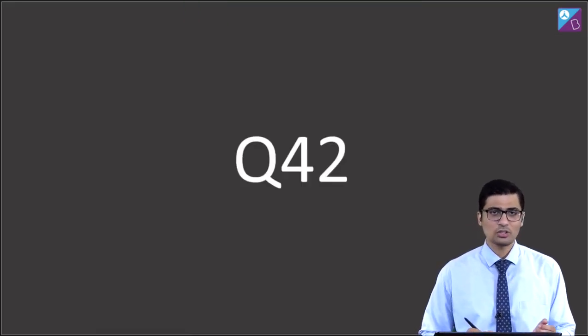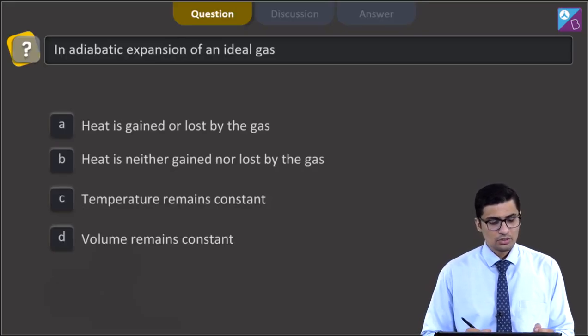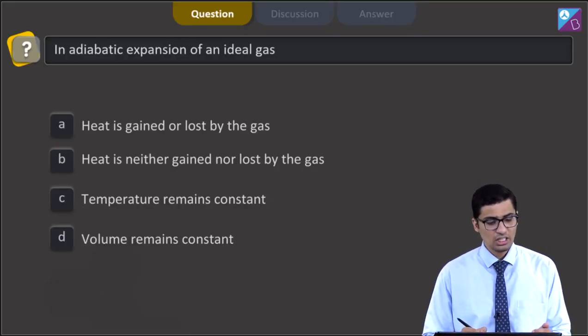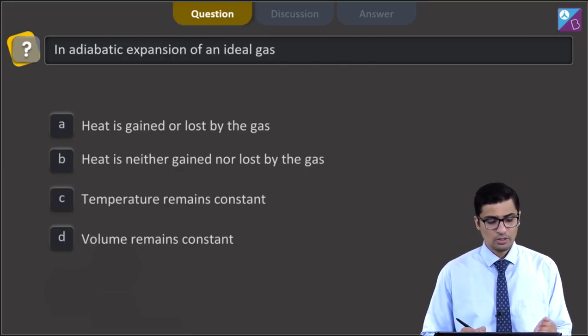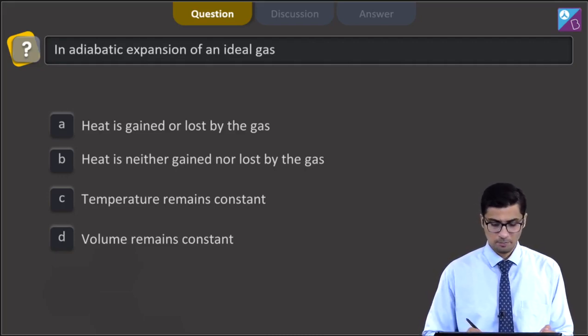This is question 42. The question states: in adiabatic expansion of an ideal gas — heat is gained or lost by the system; heat is neither gained nor lost by the system; temperature remains constant; or volume remains constant.